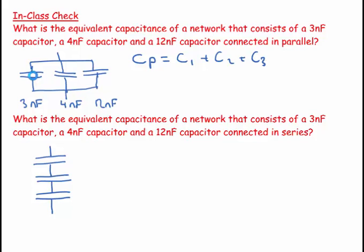And basically all you're doing is keeping the same gap and adding the areas together, so the capacitance gets bigger. So C parallel is going to equal 3 plus 4 plus 12, which equals 12 plus 7 is 19 nanofarads, which equals 19 times 10 to the minus 9 farads.